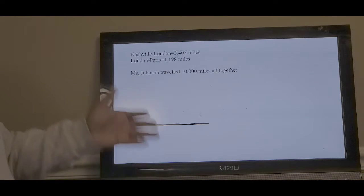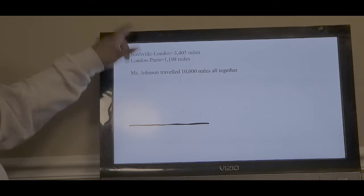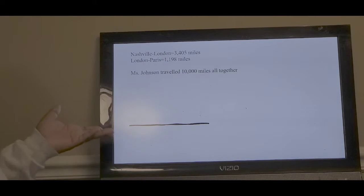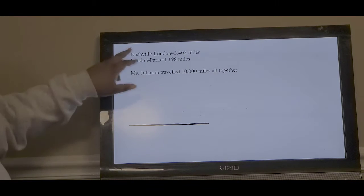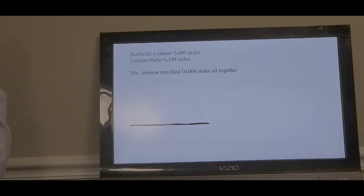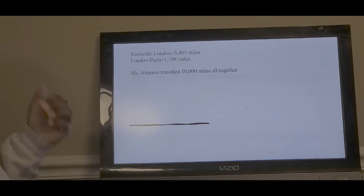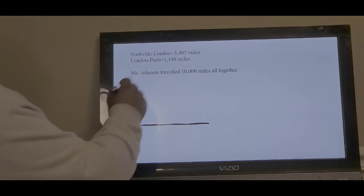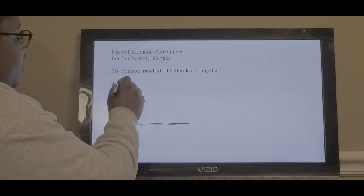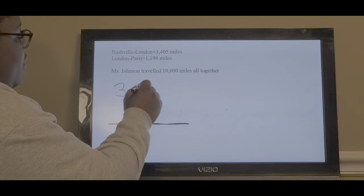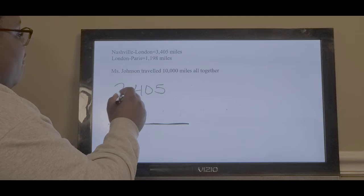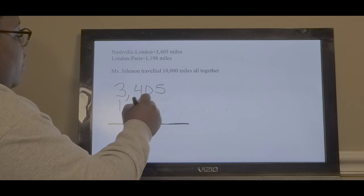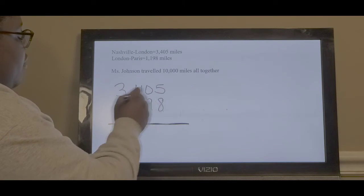We know that Ms. Johnson lives in Nashville. From Nashville to London, she traveled 3,405 miles. I know that she went from London to Paris, and that equals 1,198 miles. The first thing I need to do is add those two miles together. We know that Ms. Johnson traveled 3,405 miles from Nashville to London. We also know that she traveled 1,198 miles from London to Paris.